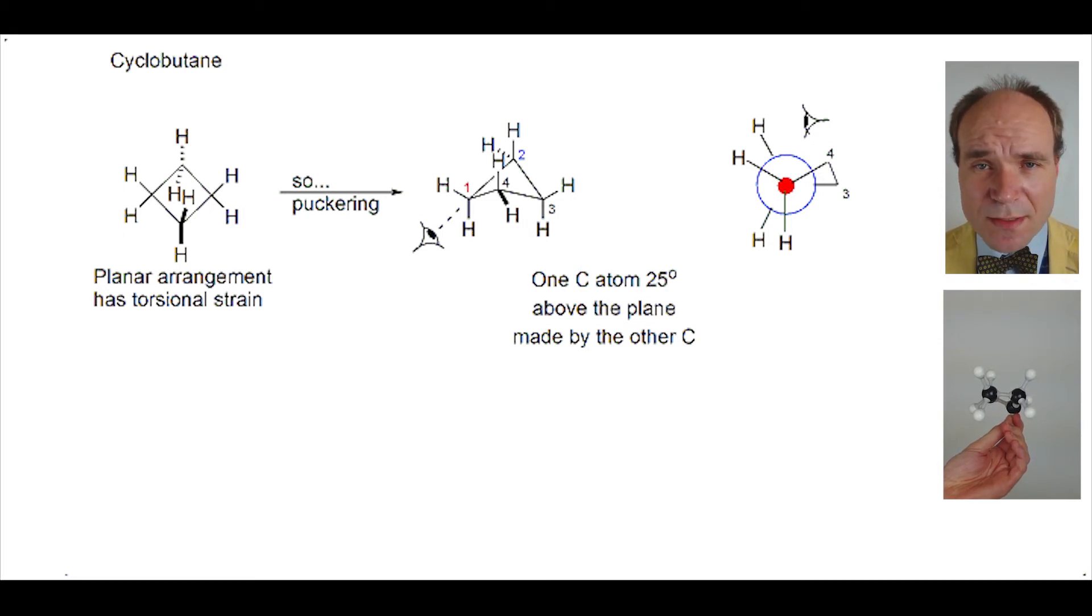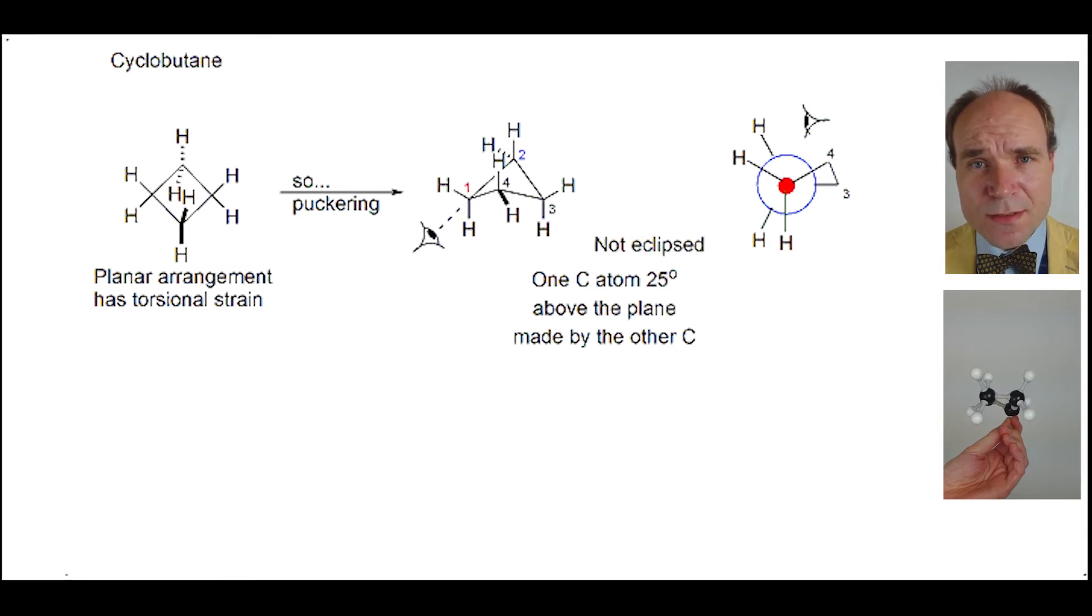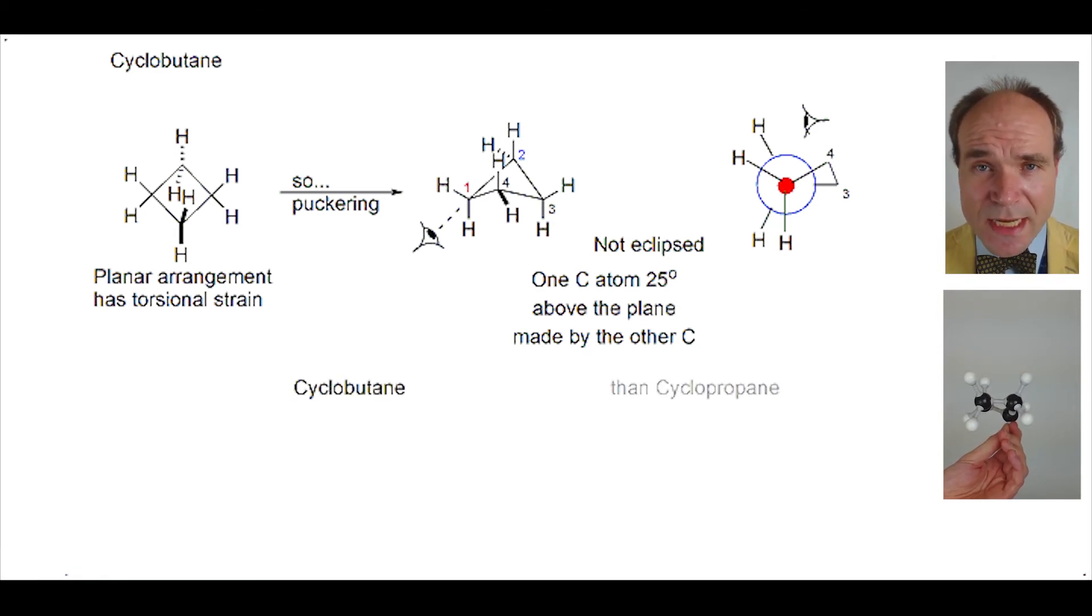No longer do we have eclipsing interactions, but equally they're not staggered yet, so we do still have a little torsional strain. In fact, when we compare cyclobutane to cyclopropane, cyclobutane has less angular strain but more torsional strain.